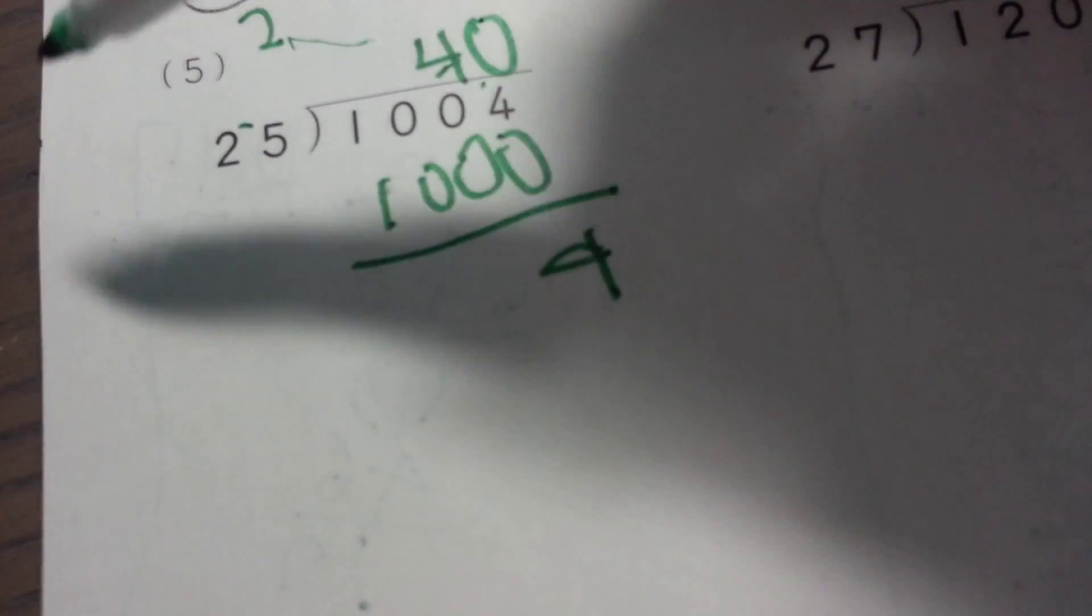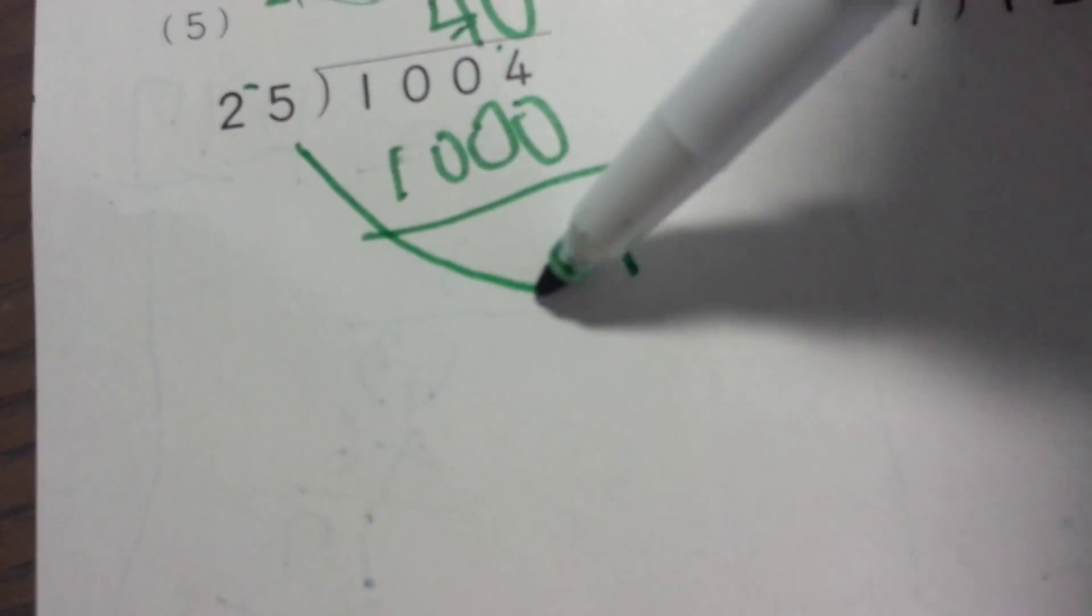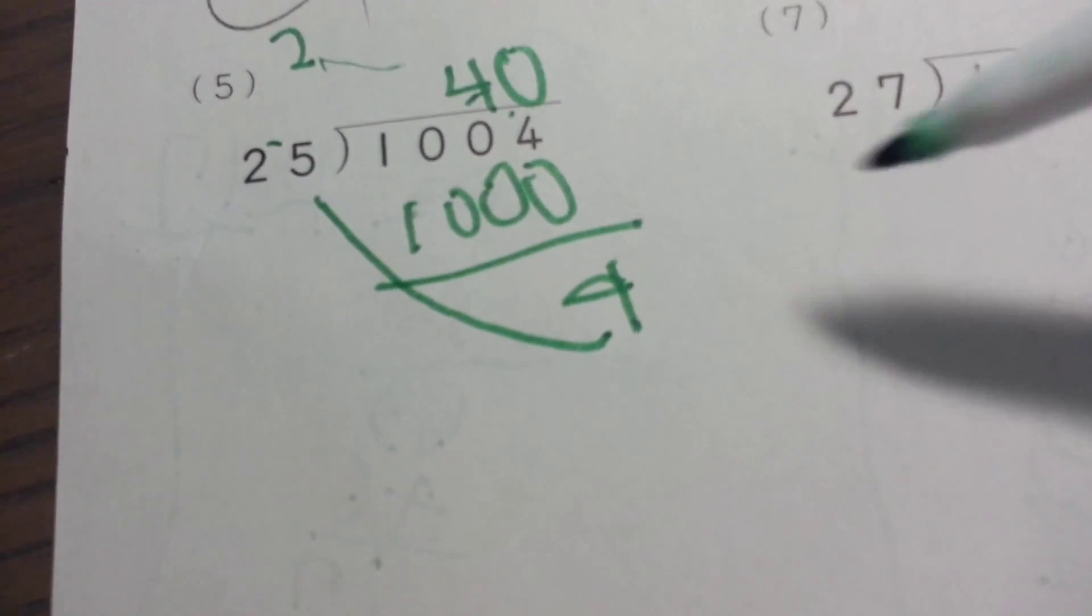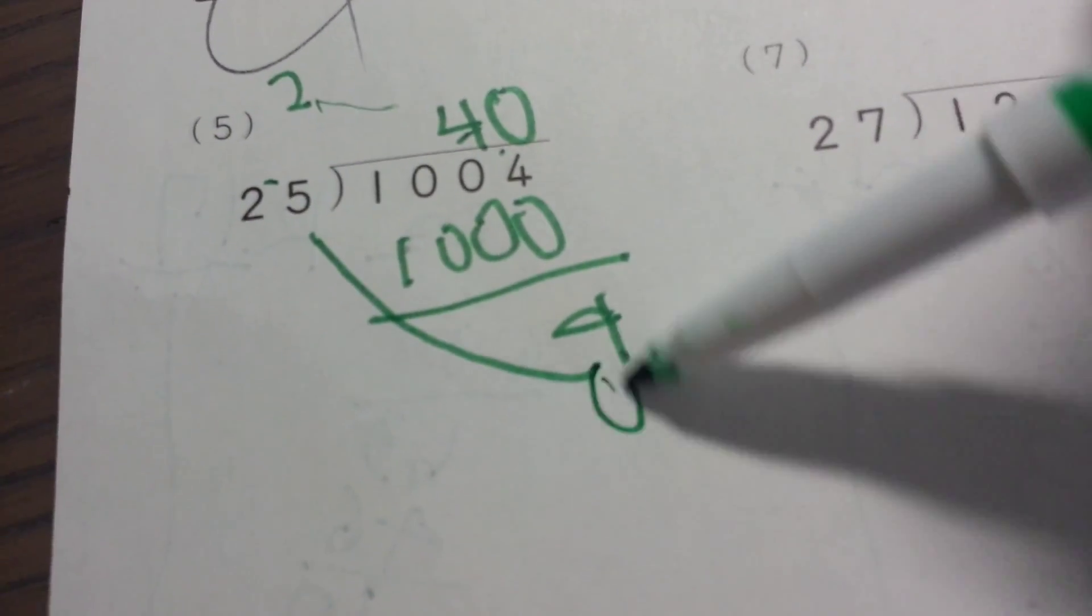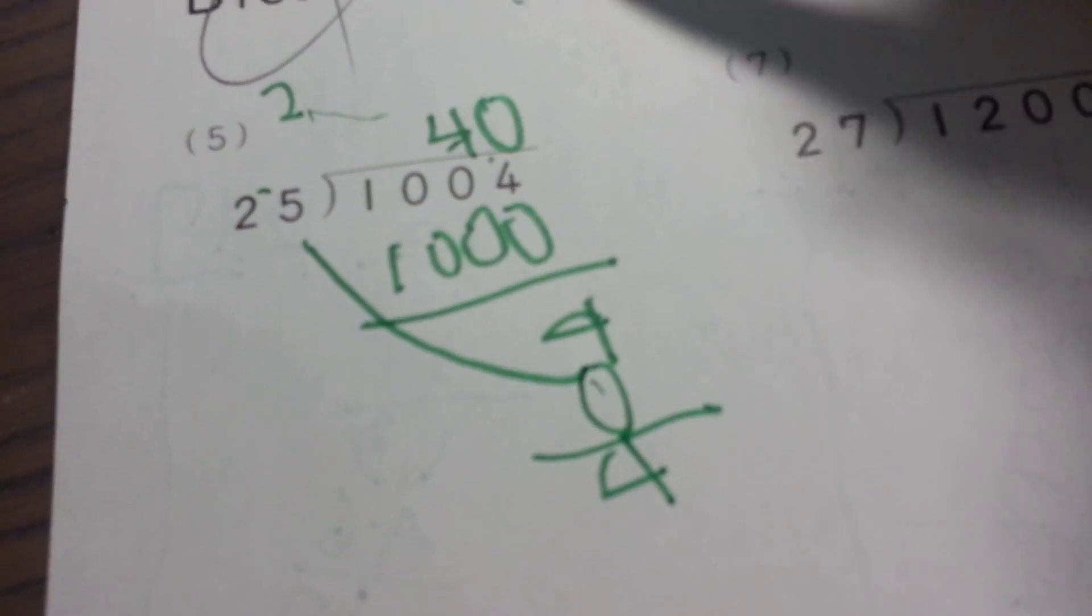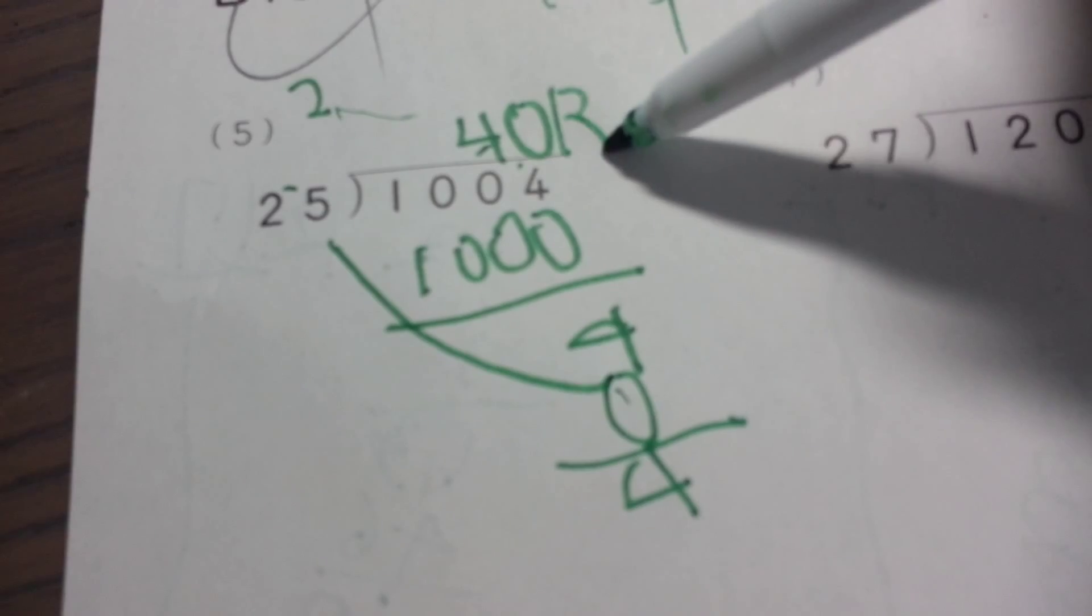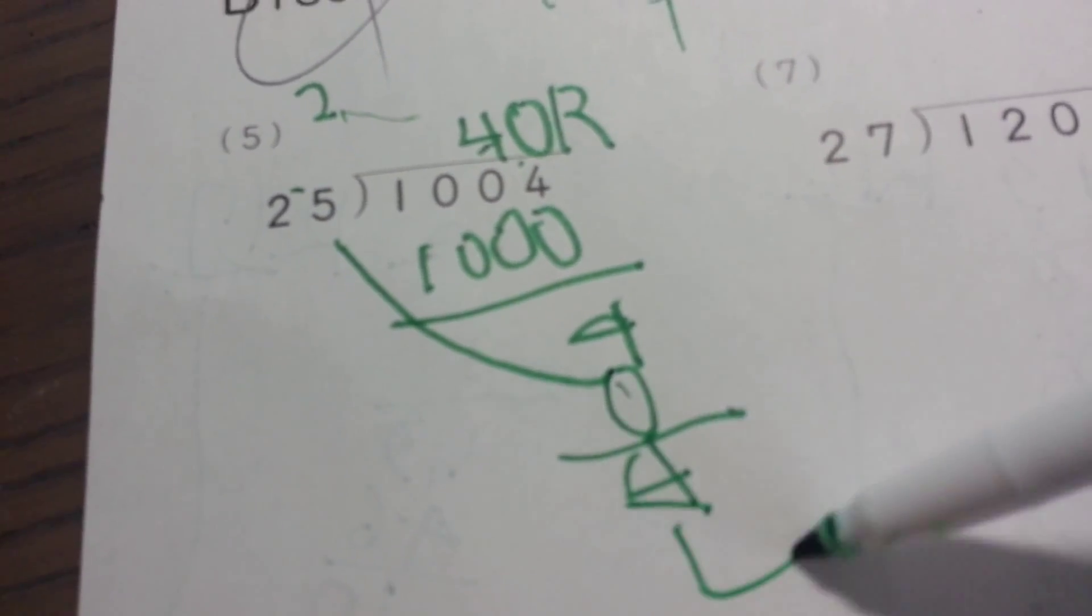You can't do it because 25 doesn't go there, and that means it's 0, means it's nothing. Compare 4, and the remaining, there is 4.